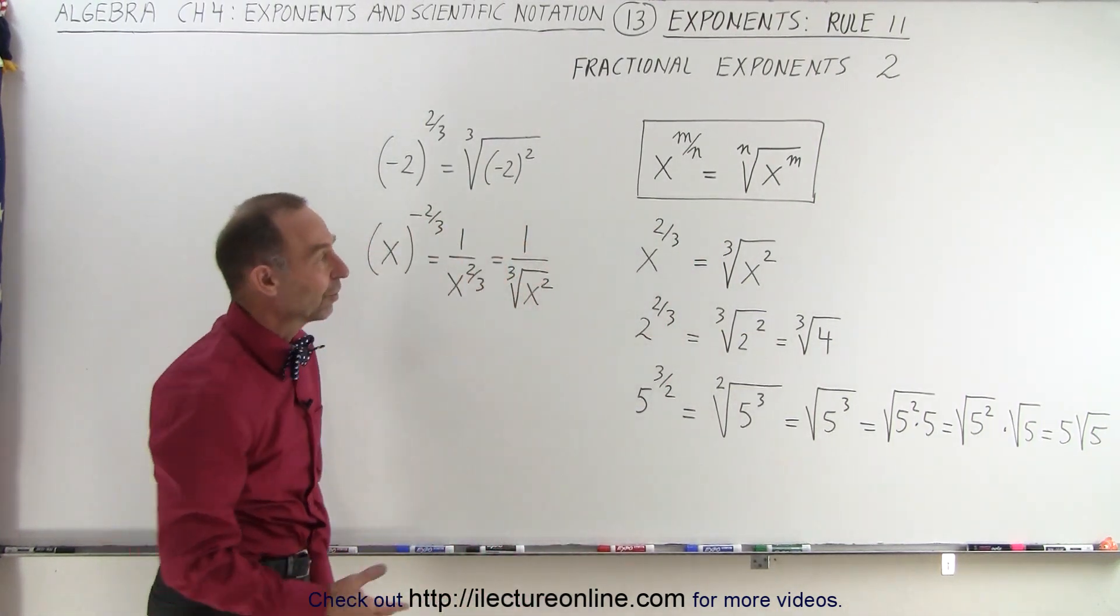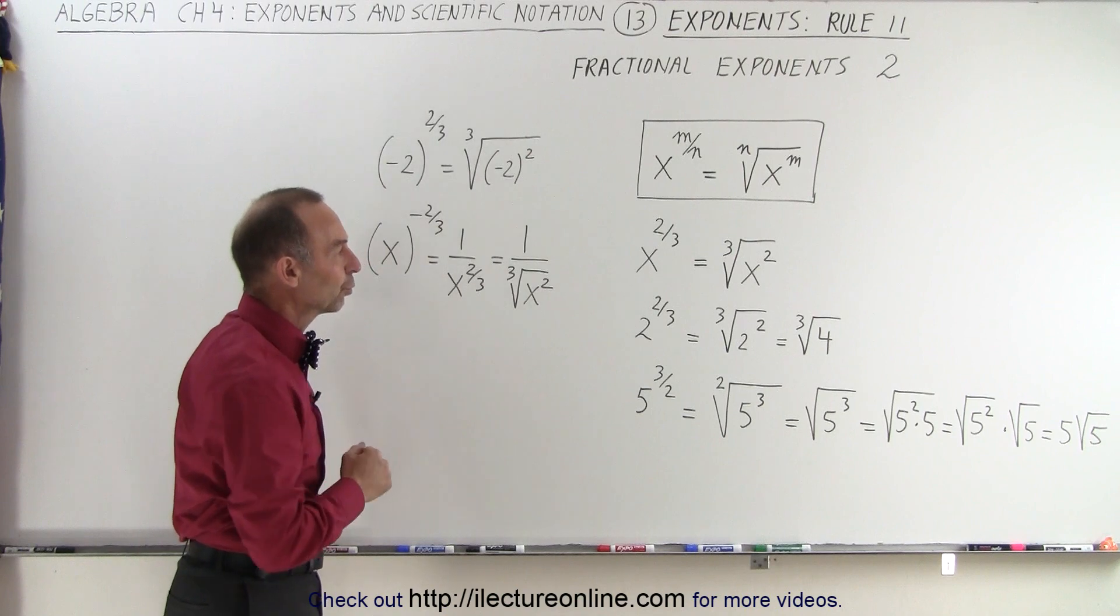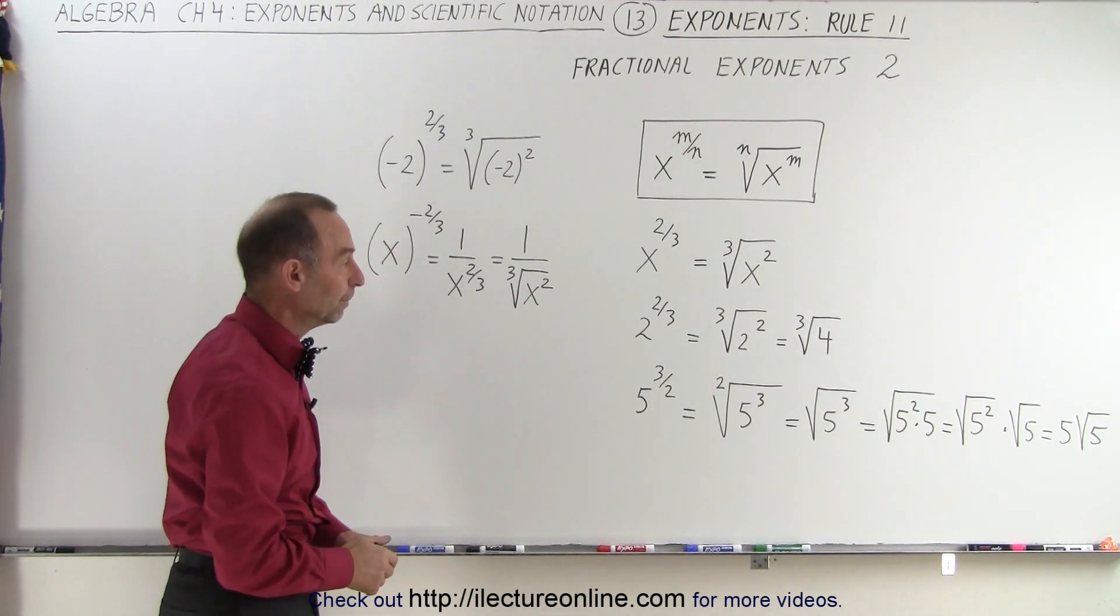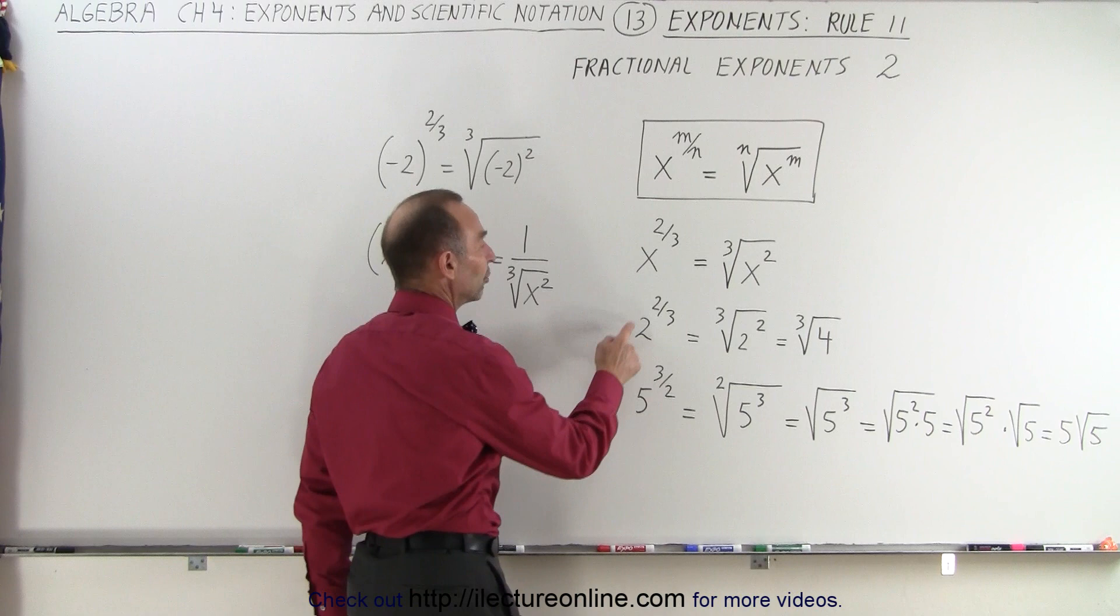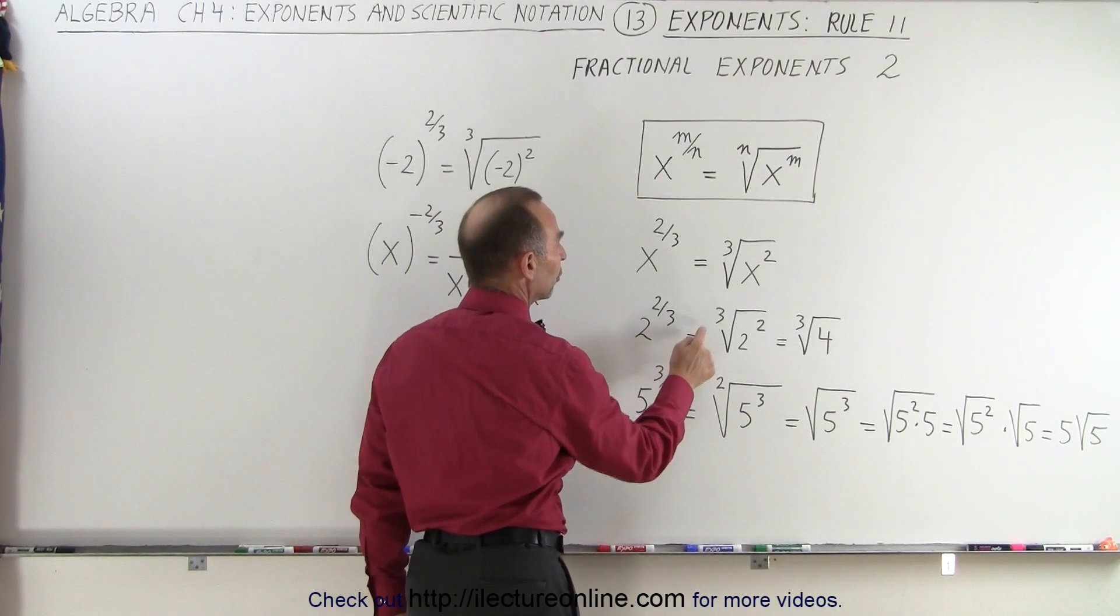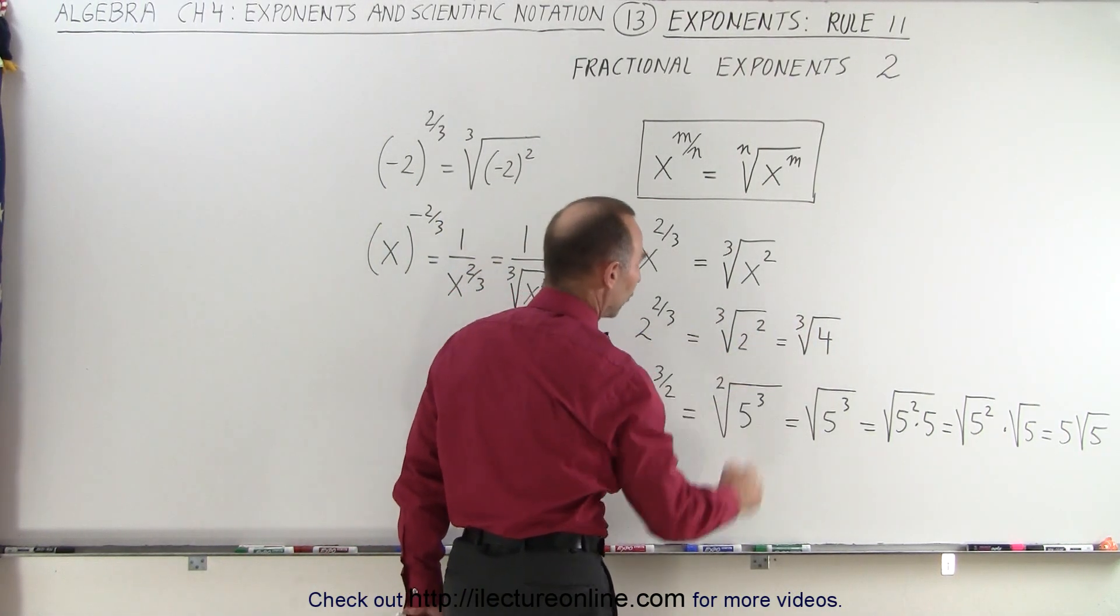And so that's the only difference between this rule and the previous rule when we have a number in the exponent which is other than 1. So if we have 2 raised to the 2/3 power, that is equal to the cube root of 2 squared or the cube root of 4.